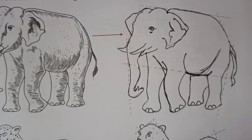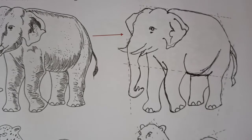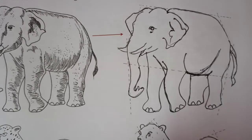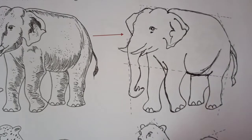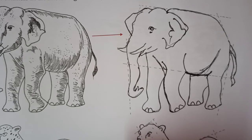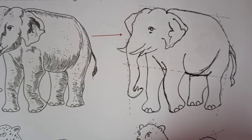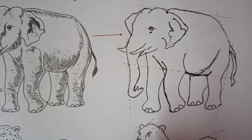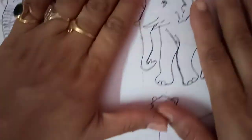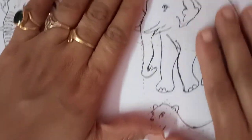You will see all the animals in the zoo. Now we are in lockdown and we can't go anywhere, but when we get a chance, we will go and see all the animals in the zoo. We will observe what is their color, what is their texture, what is their body like.